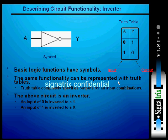The same functionality can be represented with truth tables, completely specifying all input combinations. The above circuit is an inverter. An input of zero is inverted to 1 and vice versa.